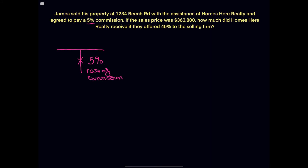Since we've labeled that rate of commission at the bottom, we're going to label it amount of commission at the top. Now we need to label our whole side. We know a commission is paid off of the sales price of the home. From the problem, we know the sales price is $363,800, and if we multiply, we find out the total commission is $18,190.